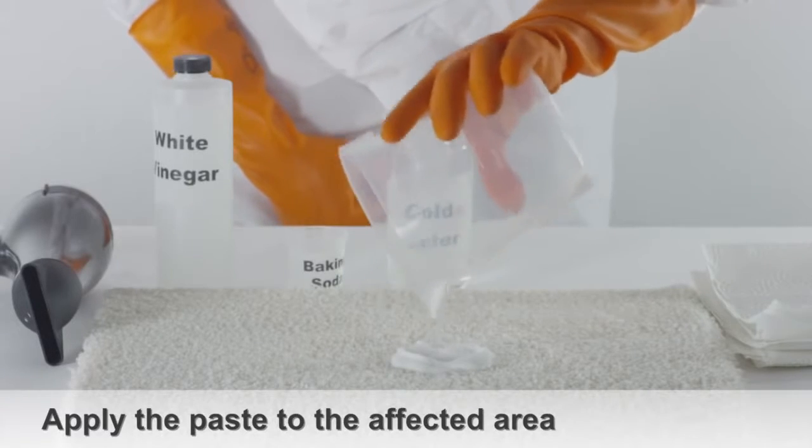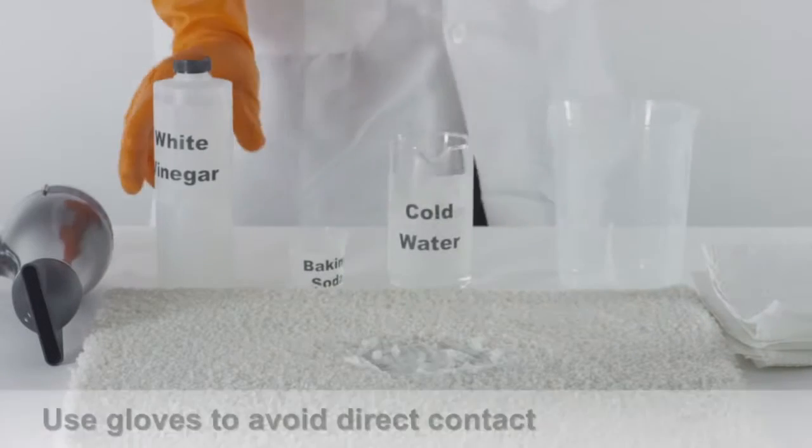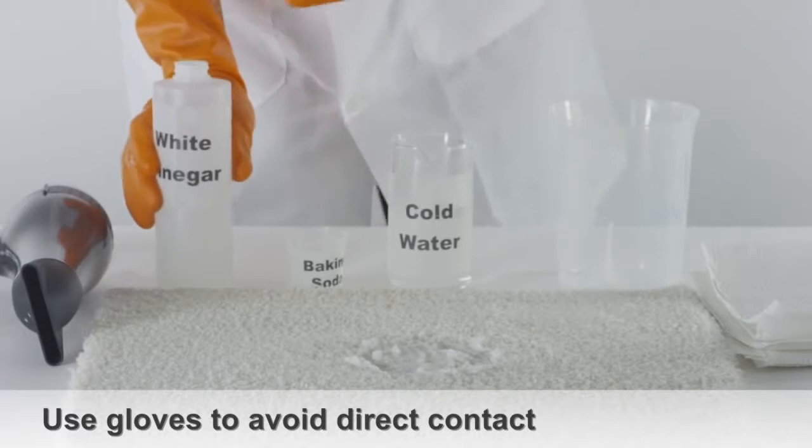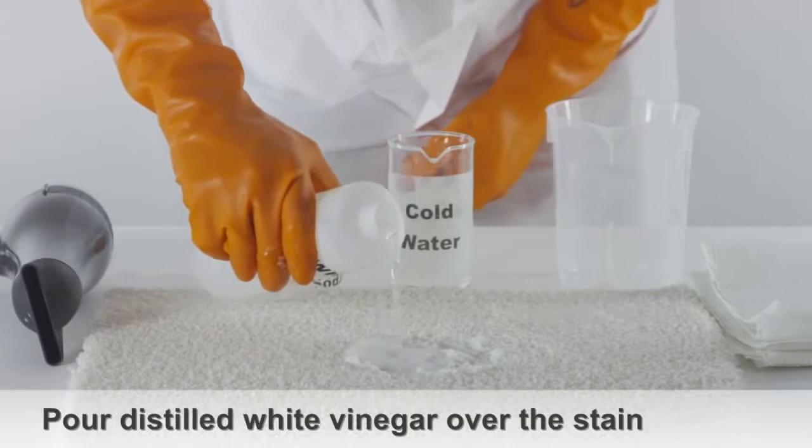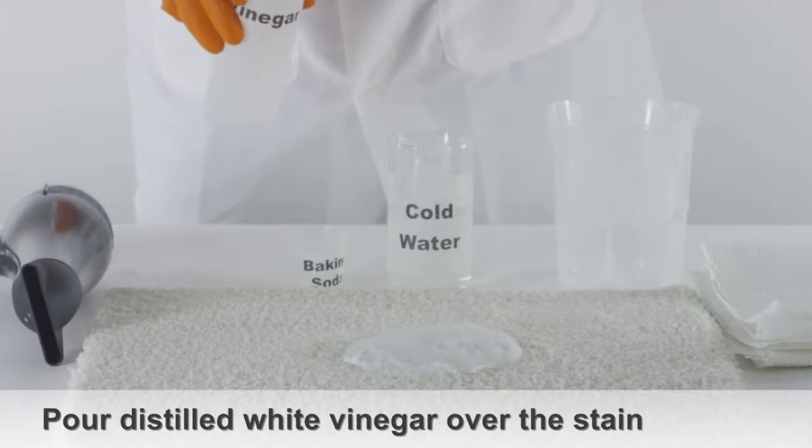Apply the paste to the affected area. It's best to use gloves to avoid any direct contact with the urine stain. Next, pour enough distilled white vinegar over the area to cover the stain.